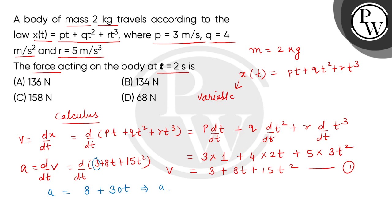Now we have to find acceleration when t is 2 seconds. So this will be 8 + (30 × 2). This will be 8 + 60, which means 68.